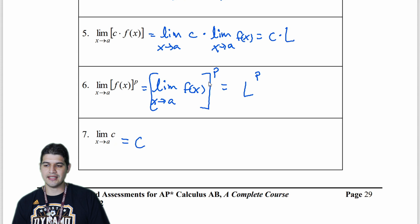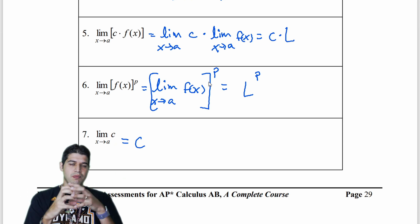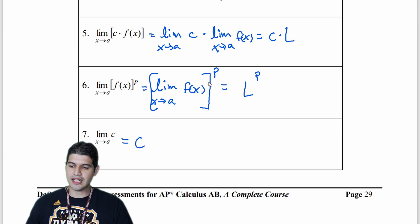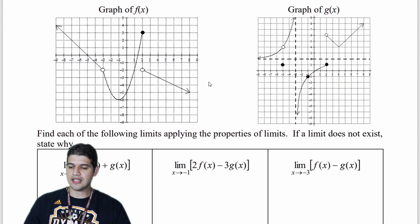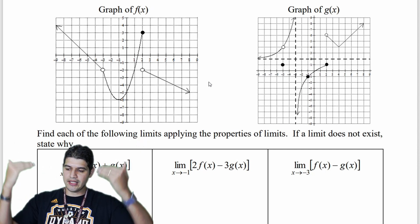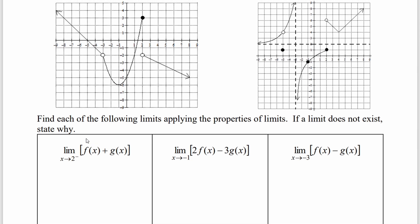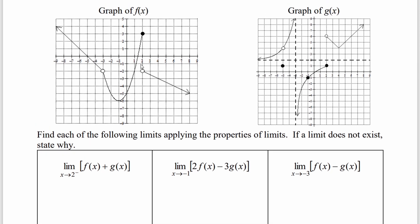Those are the properties of limits. We don't need to keep writing out the full limit notation every time; we can start to phase that out. Now let's apply these properties using graphs. Looking at x approaching 2 from the left: for f of x, the limit from the left is 3, and for g of x, the limit from the left at 2 is 1. So 3 plus 1 gives us 4.